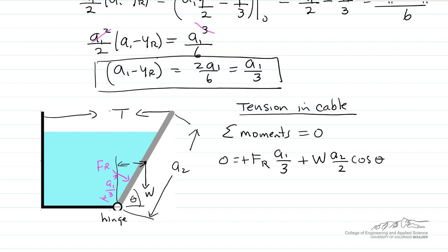The tension is counterclockwise, so minus T times the distance a2 sin(θ). The distance between the tension and the hinge is a2 sin(θ).